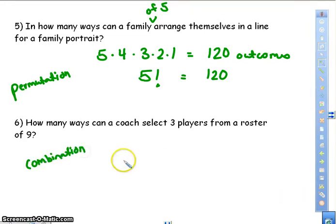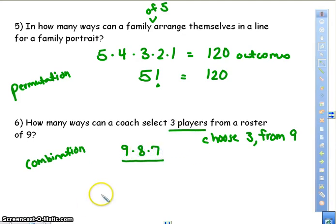So remember, when you do a combination, it's going to be more like a division problem. So I'm picking three players. So I'm going to choose three from nine. So for the first person I pick, I'm going to have nine to choose from, and then eight, and then seven. And I'm going to stop because I'm only picking three players. And then I'm going to divide by one, two, three factorial, which remember is three times two times one.